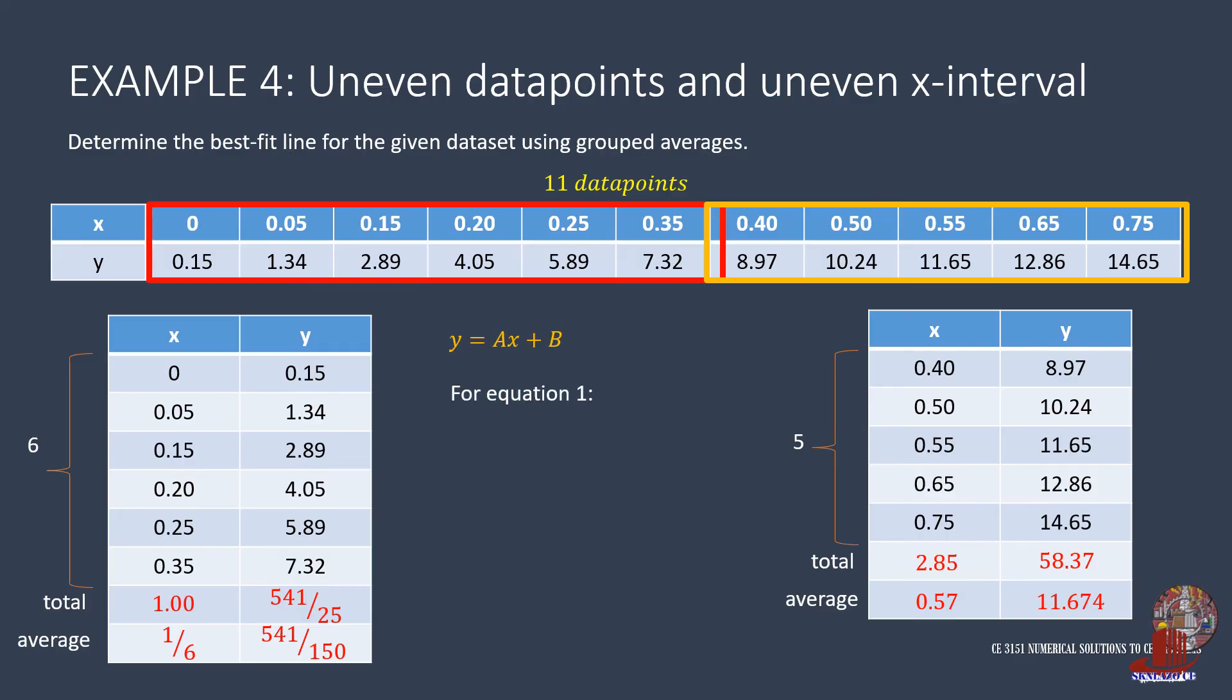To have the linear equations, the first equation is 541 over 150 as equal to 1/6 of A plus B. The second equation is 11.674 as equal to 0.57A plus B.